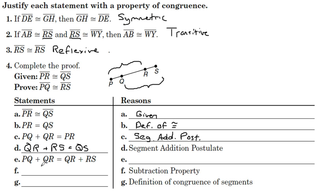And then E, PQ plus QR equals QR plus RS. We got these equal to each other by substitution.